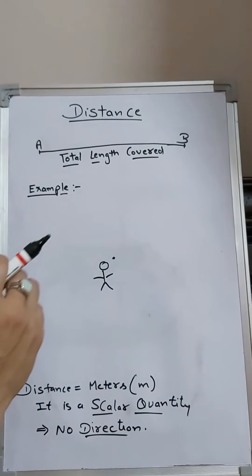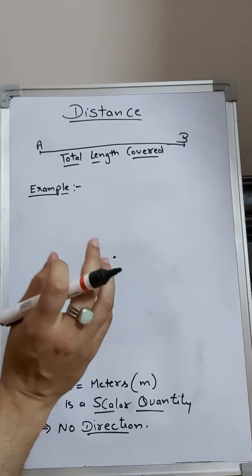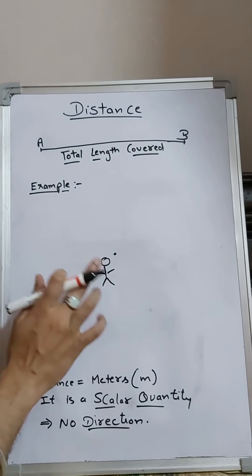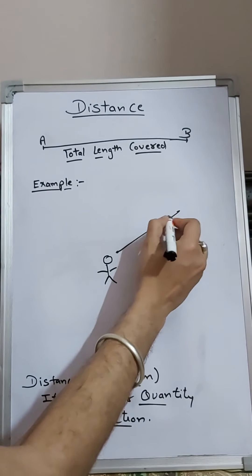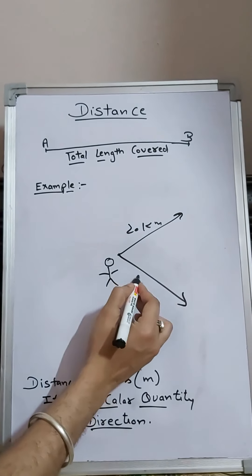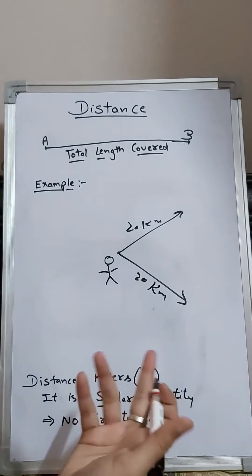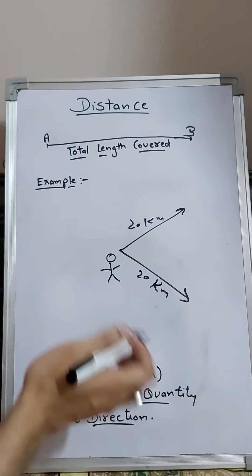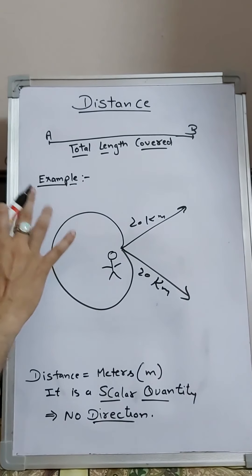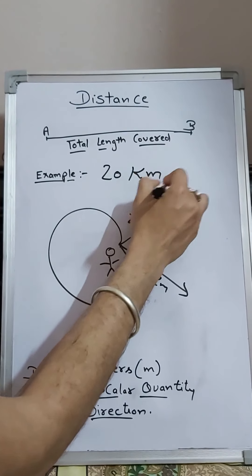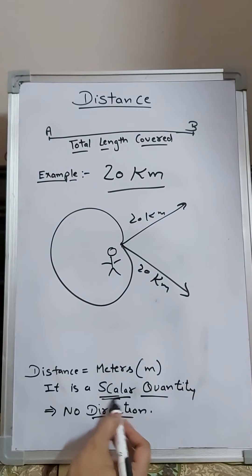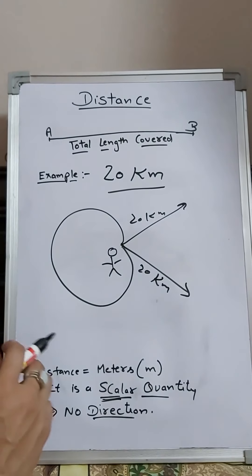A scalar quantity is one that has only a magnitude — a numeric value — but no direction. For example, if you have to cover 20 kilometers, that 20 kilometers can be in any direction. It's not specified that 20 kilometers is in a particular direction. Where no direction is given, it is a scalar quantity.